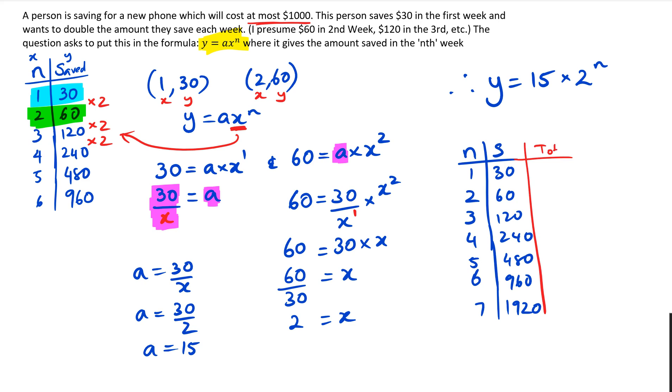So after first week he's got $30. After the second week he's actually got $90 because he's got $30 from the previous week. So then I've got $90 plus $120 which is $210. $210 plus $240 which is going to be $450. $450 plus $480 is $930. And $930 plus $960 is $1890.